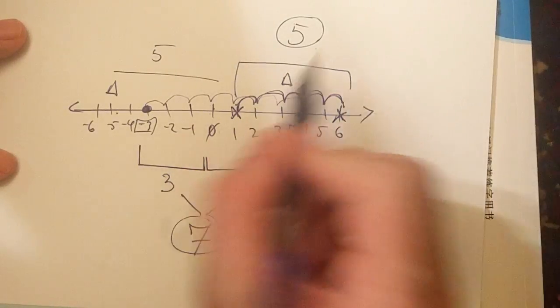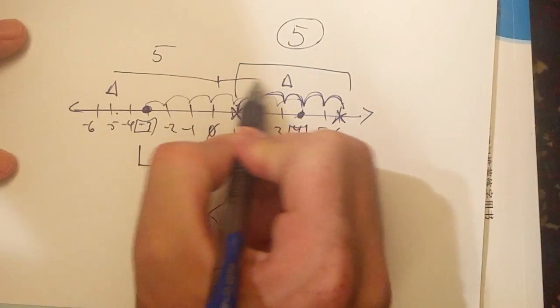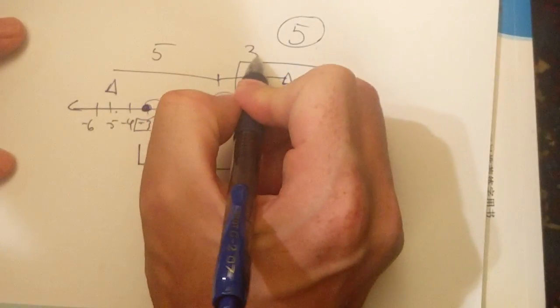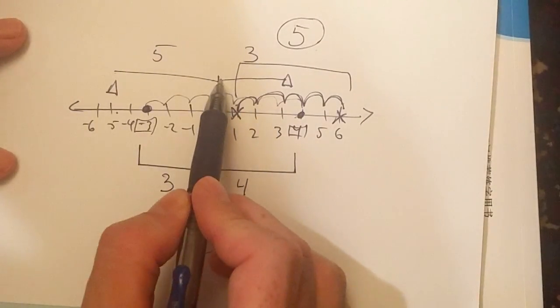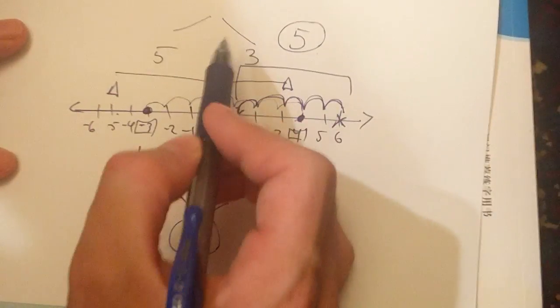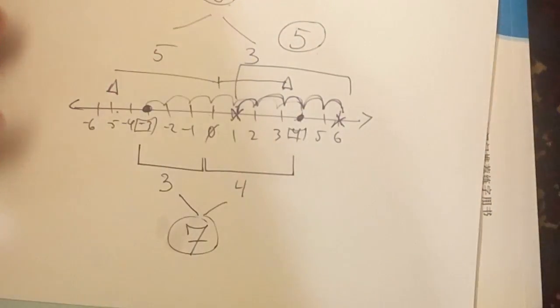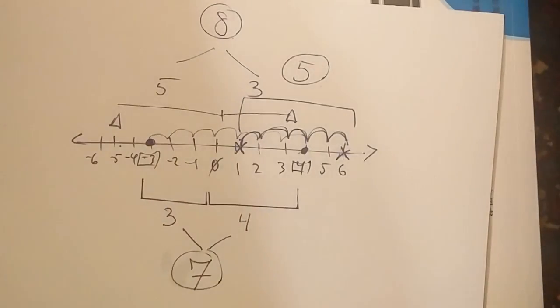Now, how about the distance, the absolute value from zero all the way to three? That is, of course, three. And so if one has a distance of five, the other has a distance of three, what is the total distance? The total distance is eight.